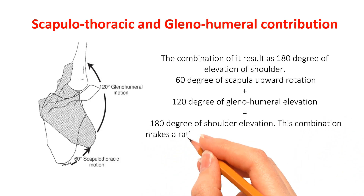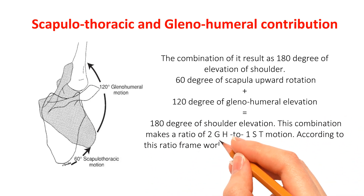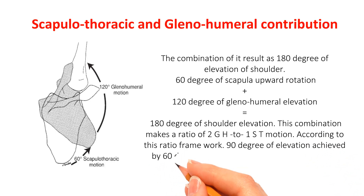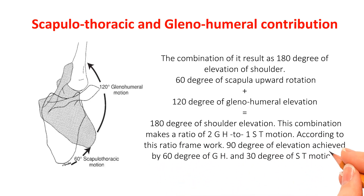This combination makes a ratio of 2 GH to 1 ST motion. According to this ratio framework, 90 degrees of elevation is achieved by 60 degrees of GH and 30 degrees of ST motion.